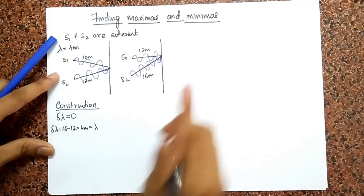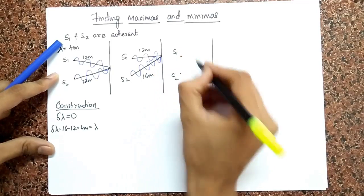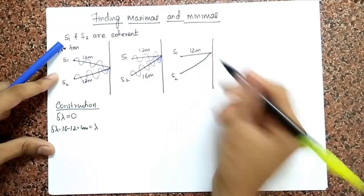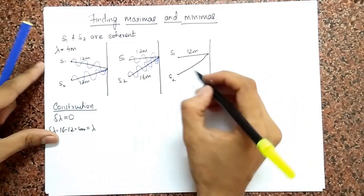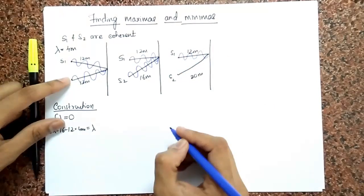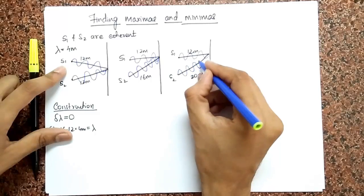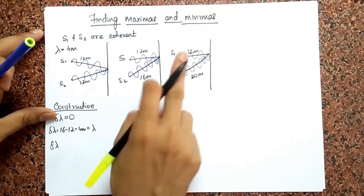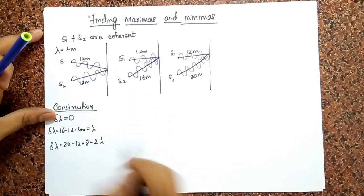Let me do one more example. S1 travels 12 meters, S2 travels 20 meters. S1 has three waves; S2: 20 divided by 4 is 5, so five waves. Again, construction. The path difference is 20 minus 12, which is 8, which is two times lambda. So a path difference of two lambda also gives constructive interference.